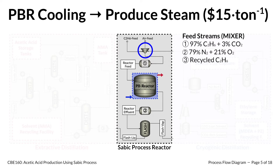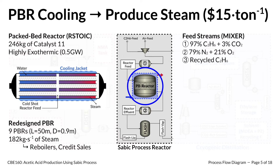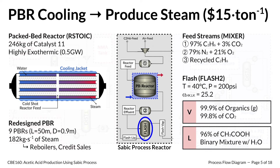In the gray section, the mixer combines several feed streams to match the operating conditions of the packed-bed reactor. The reactor feed contains the ethane-rich feed stream from the existing petrochemicals facility, the air feed stream, and recycled ethane separated using cryogenic distillation columns on the right-hand side. The packed-bed reactor contains 246 kilograms of catalyst and is highly exothermic. We separated the reactor into nine identical tubes to meet sufficient surface area requirements for heat transfer. 182 kilograms of steam is produced every second, and we have repurposed this steam to decrease process utilities costs and raise additional revenue through steam credit sales. We chose a flash drum to separate the reactor effluent into liquid and gaseous streams, as installing distillation columns would induce additional capital costs for negligible benefit.